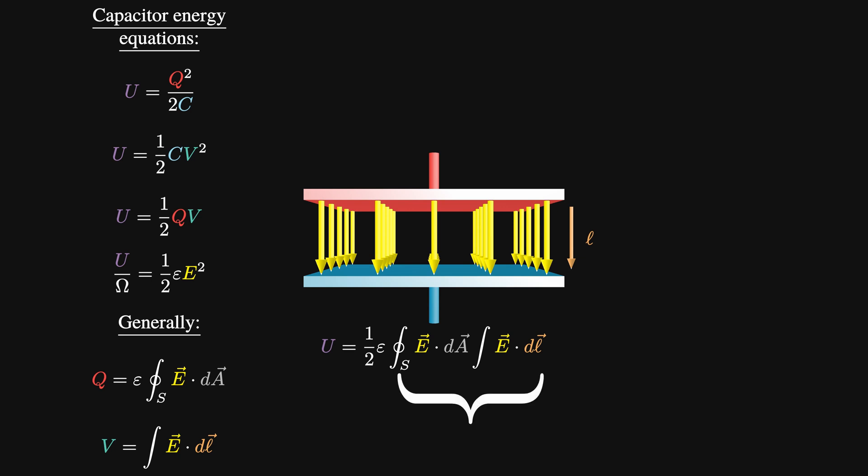We can rewrite these two integrals as the triple integral of E squared with respect to D omega. Specifically, we are integrating E squared over the entire volume it occupies. This is a more general way of writing what we found for our plate capacitor.